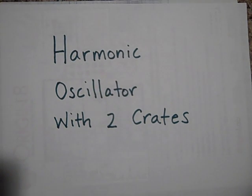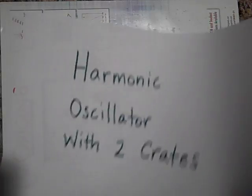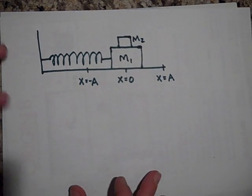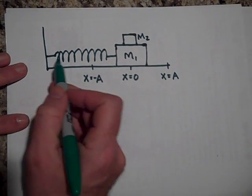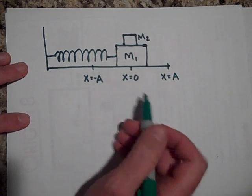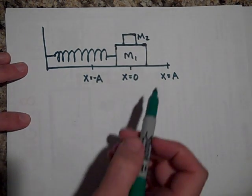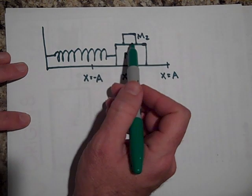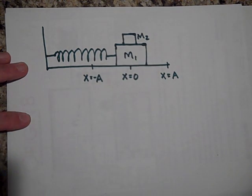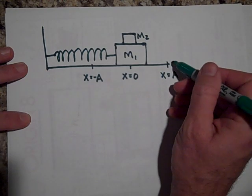I'd like to tell you about a harmonic oscillator where you have two crates positioned like this. You have your basic harmonic oscillator: a spring attached to a wall with a mass M1, but on top of mass M1 there's another crate M2 that's going to be held there just by friction.